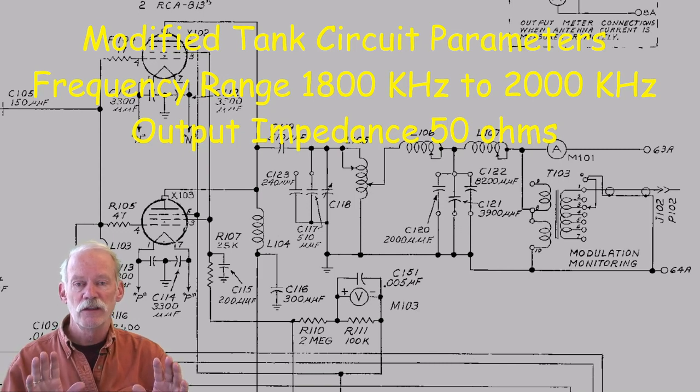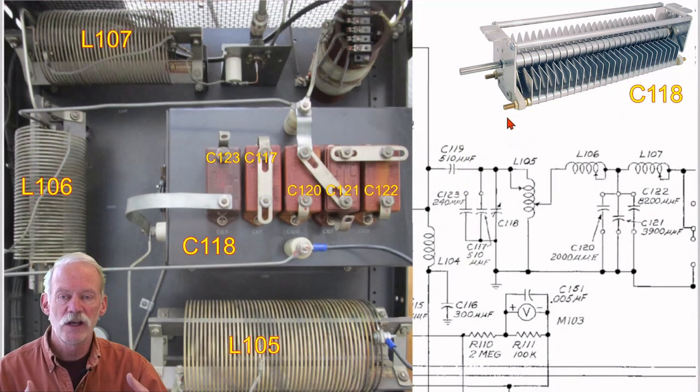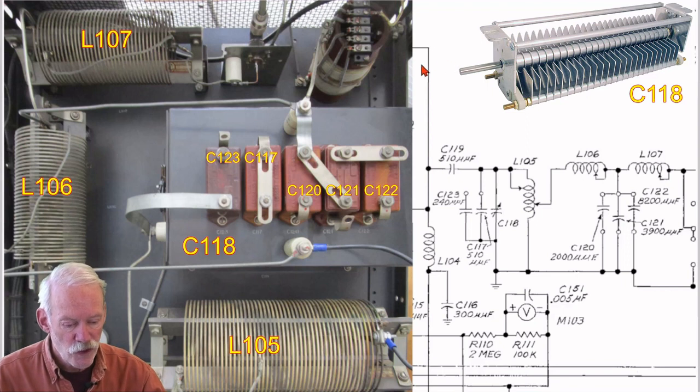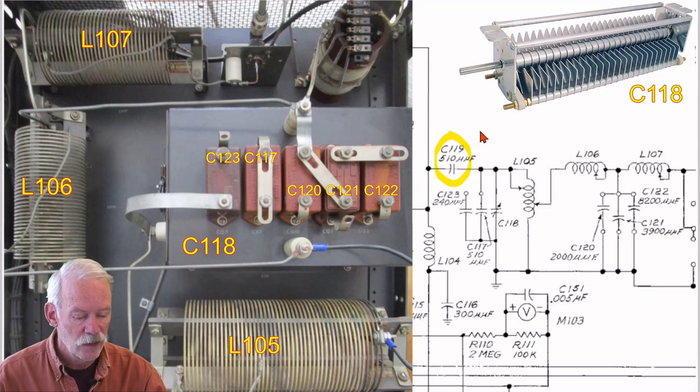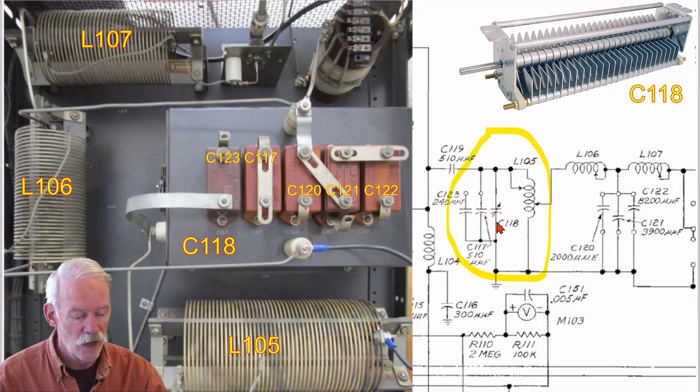Here's the output network as RCA originally designed it. The tubes would be off to the left here, and there's a coupling capacitor for DC blocking. The actual resonant tank circuit is right here. And it consists of this capacitance that was created from this variable capacitor, a big Johnson bread slicer shown here in this picture, and one or two capacitors that you would connect in to give you enough capacitance for whatever piece of the AM broadcast band you were operating in.